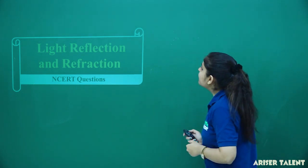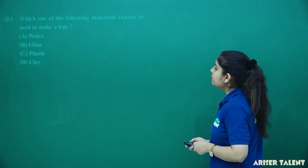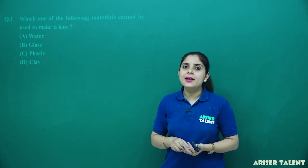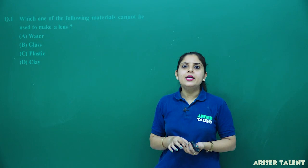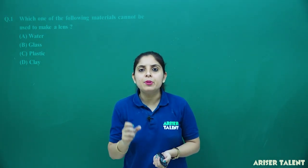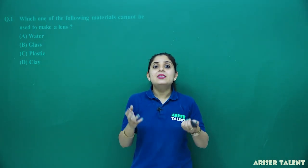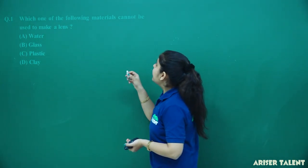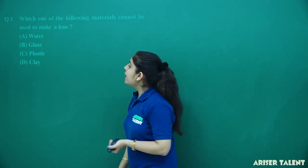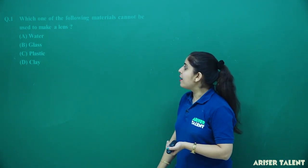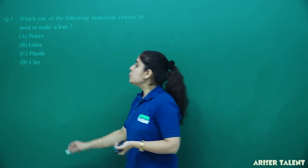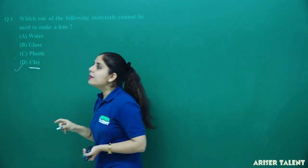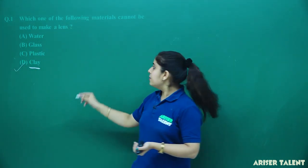The first question in the sequence is: which one of the following materials cannot be used to make a lens? Among these materials, you have to identify the material from which a lens cannot be made. The options are water, glass, plastic, and clay. Clay is not a transparent material, so you cannot make a lens from clay.